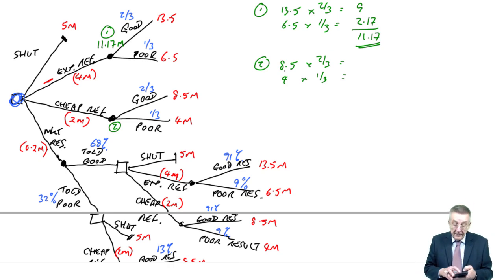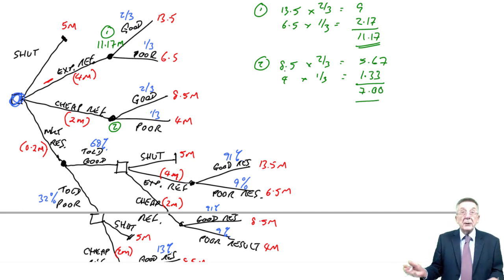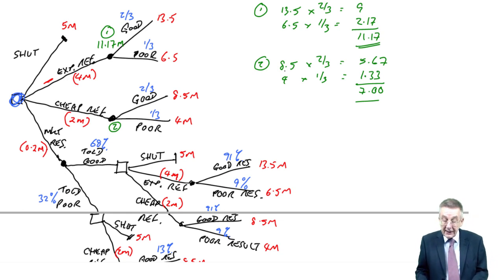And so, the expected return, if we do the cheap, 8.5 times two thirds is 5.67. Or 4 times a third, 1.33. An expected seven. So, it's a normal expected value calculation, so I'm not going to repeat all the logic of that again.